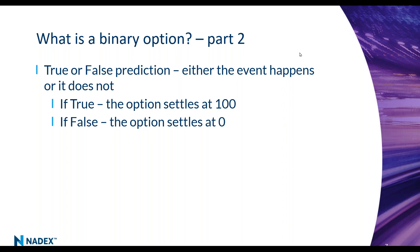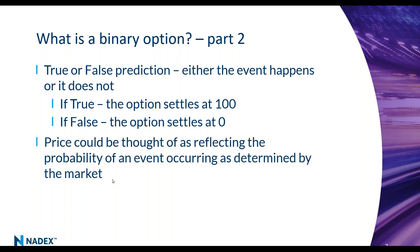These are all true or false predictions — either the event is going to happen or it's not. That is why it is considered a binary option: there are only two outcomes. If it's true, the contract goes to 100. If it's false, the contract will go to zero. Will gold be above 1830 at the end of the day? If it's above 1830, it goes to 100. If it's exactly at 1830 or below, it would be considered false and go to zero.